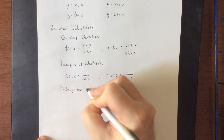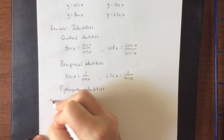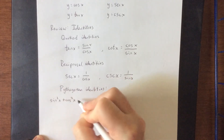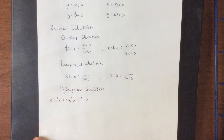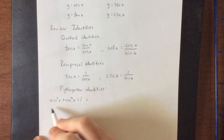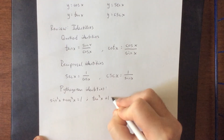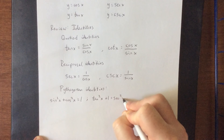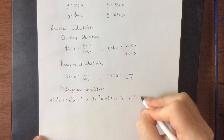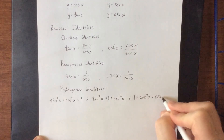The Pythagorean identities will come up as well. There are three of these, and they all involve squares of trigonometric functions. The first is that sine squared of x plus cosine squared of x equals 1. Dividing through by cosine squared of x gives tangent squared of x plus 1 equals secant squared of x. Dividing through by sine squared of x gives 1 plus cotangent squared of x equals cosecant squared of x.